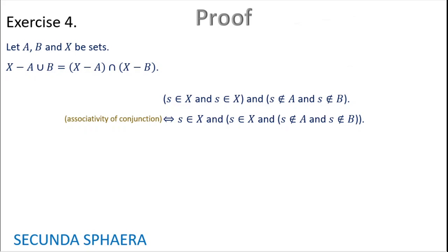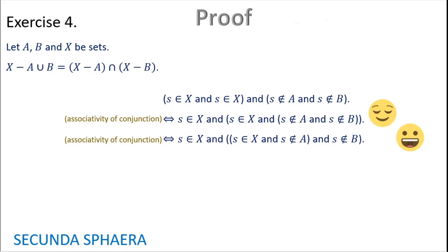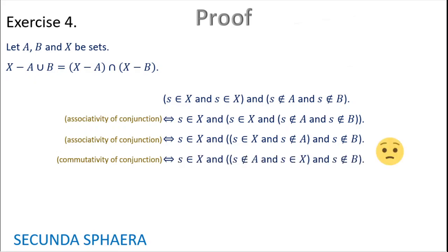At this moment we have three terms in the second group, so we can use associativity again. Moving the parenthesis to the first two terms gives s is in X, and (s is in X and s is not in A), and s is not in B. We can then commute the terms in the inner parenthesis using commutativity of conjunction: s is in X, and (s is not in A and s is in X), and s is not in B. Then we just break everything apart using associativity.